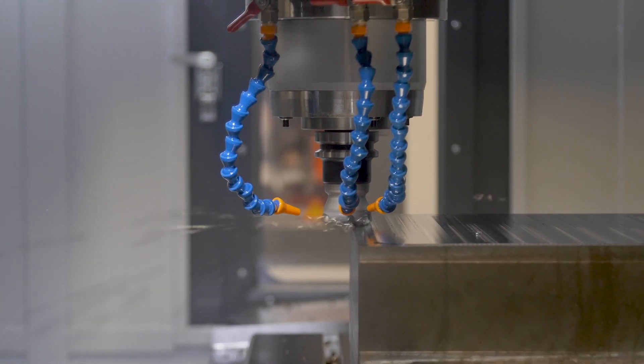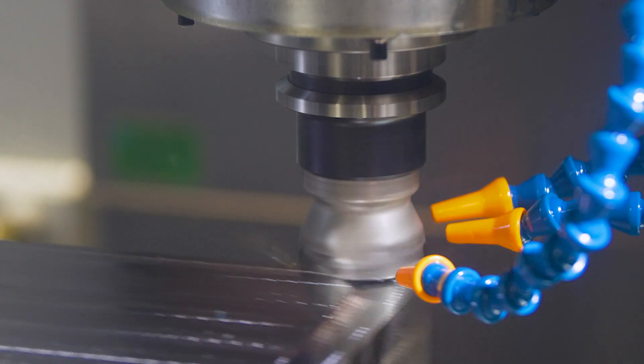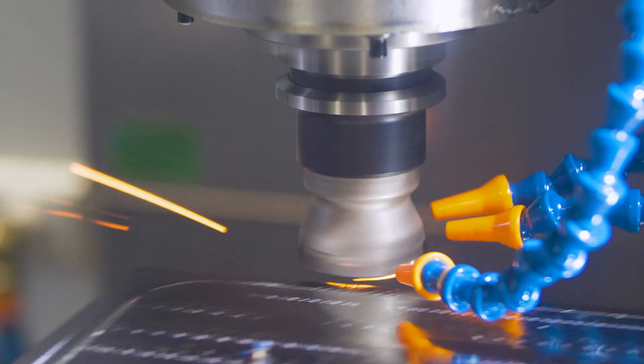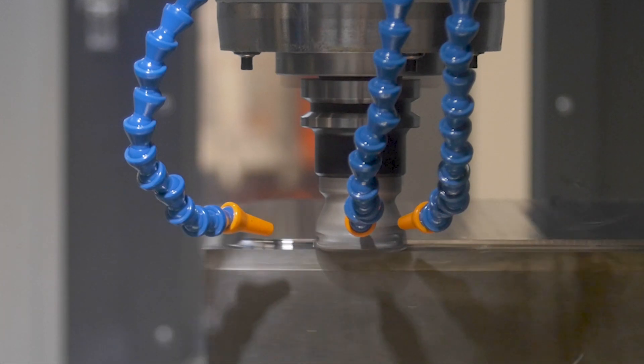This design is only usually seen on much more expensive Japanese machines. There are 7 machines in the HD range going from the 660 HD to the 3010 HD, the numbers depicting the X axis travel.